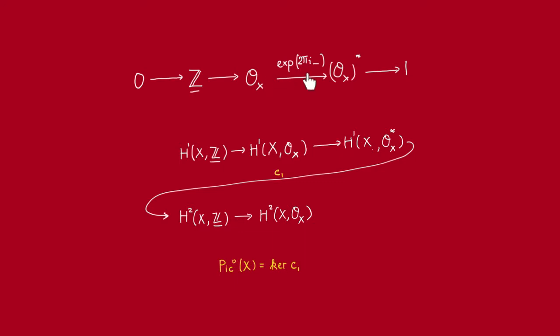Recall here we have the exponential map. And of course, the canonical way to exploit a short exact sequence of sheaves is by looking at the long exact sequence of cohomology. Alright, so we have put that here.